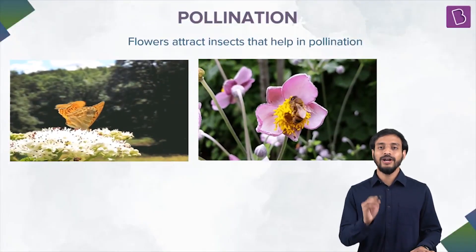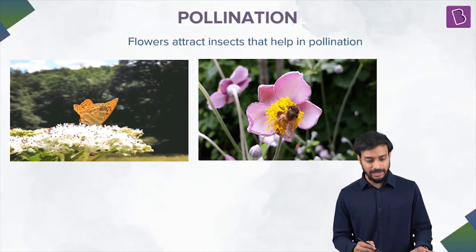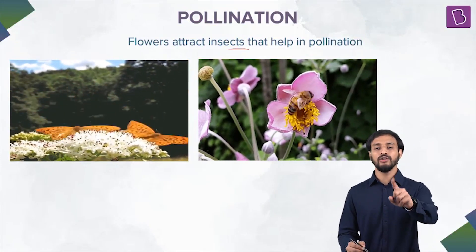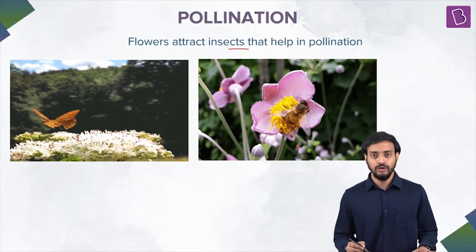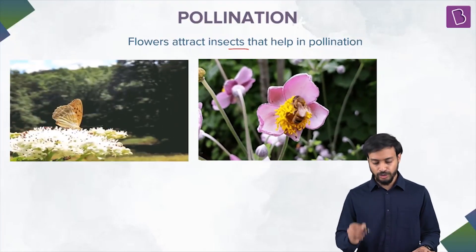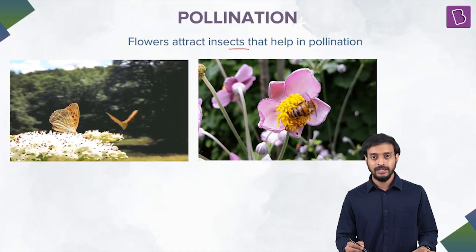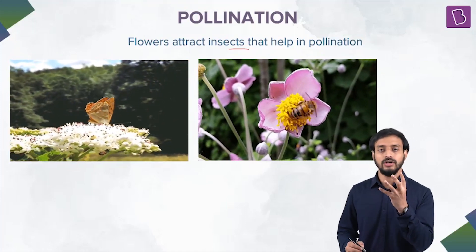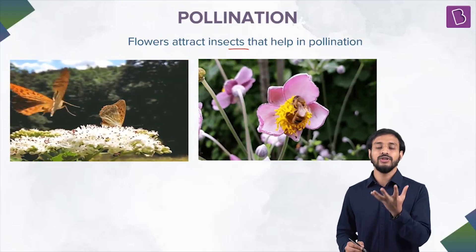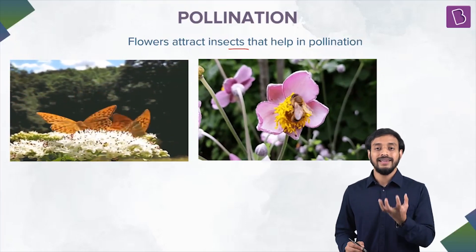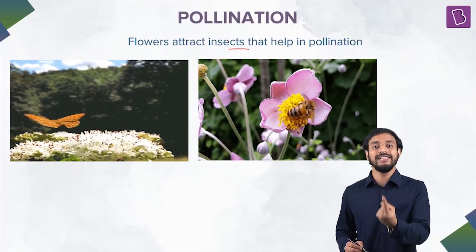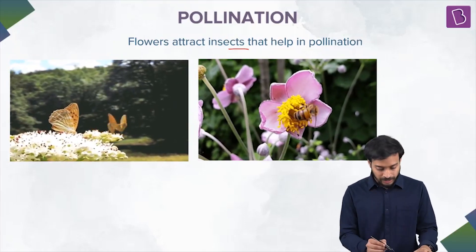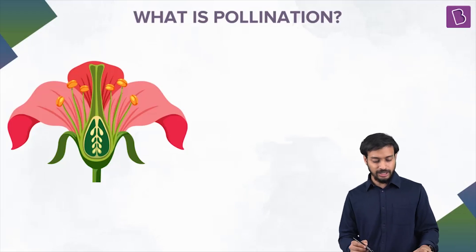Why flowers? Why do you think the flowers are there? Flowers attract insects that help in pollination. How many of you know pollination? I'm going to show you quickly. Try to understand the reason why flowers are produced. They help in attracting the pollinators — insects which help in pollination. Now what is pollination? Let's see here.